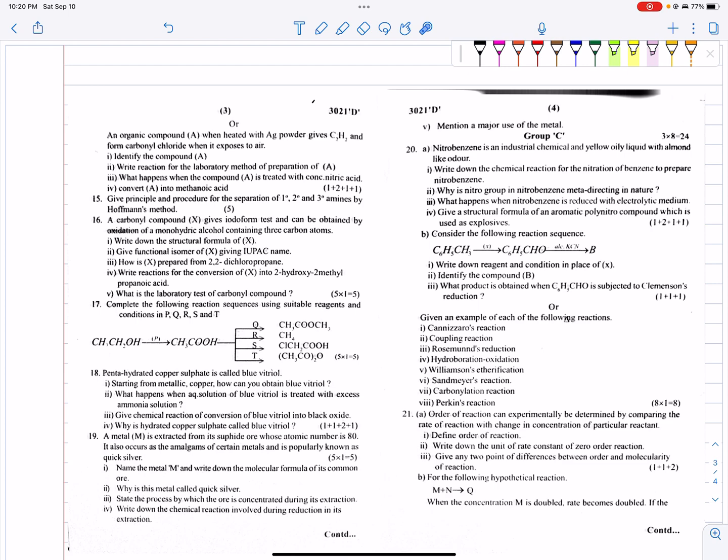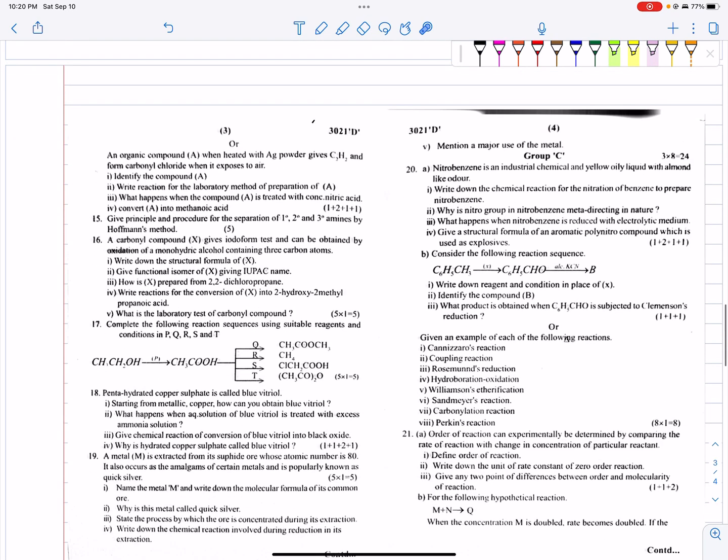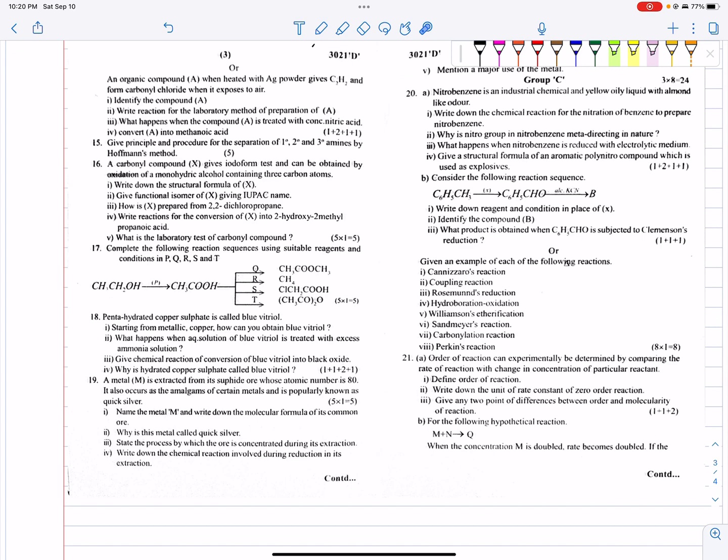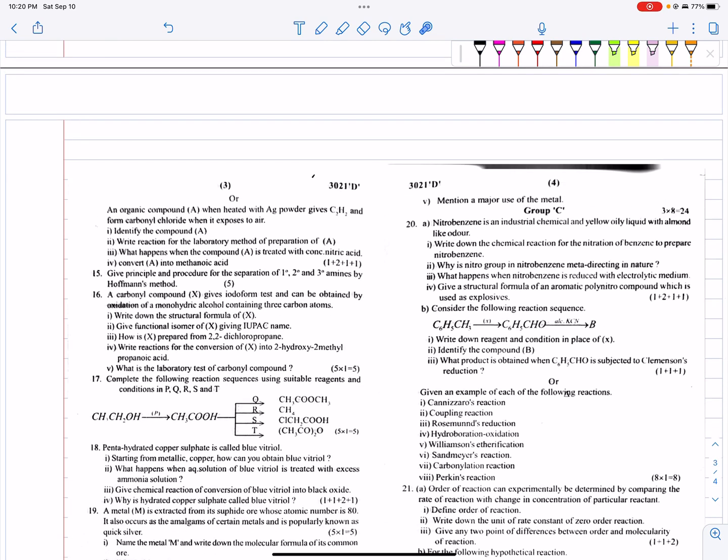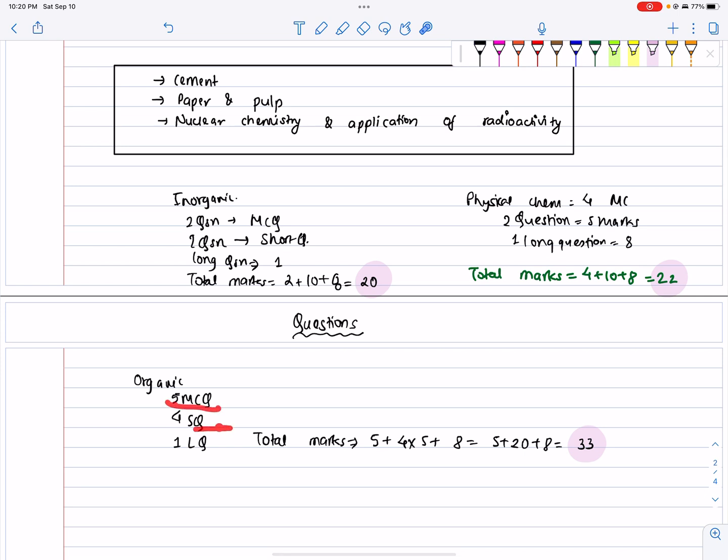Carboxylic acid and aldehyde-ketone are very important. Haloalkanes are also very important. The separation of alcohols - amine separation by Hinsberg method and Victor Meyer method are very important for short questions. And chloroform in haloalkanes is very important. So for organic chemistry, the total marks are: 5 MCQs, 4 short questions, and 1 long question equals the total marks.